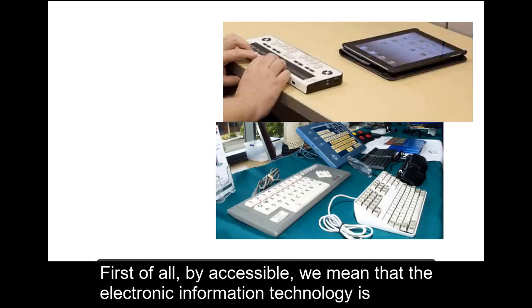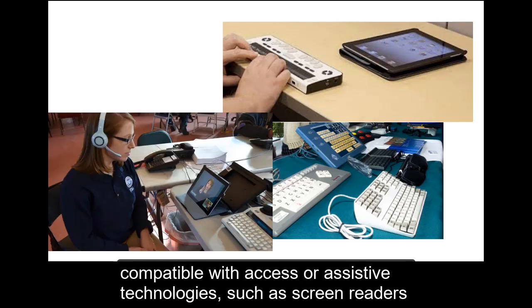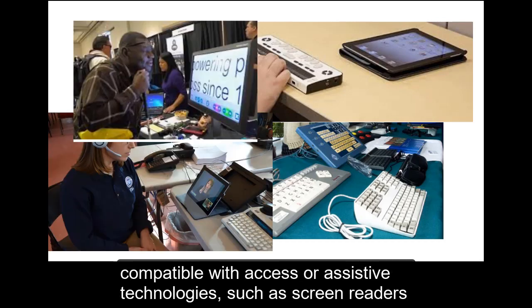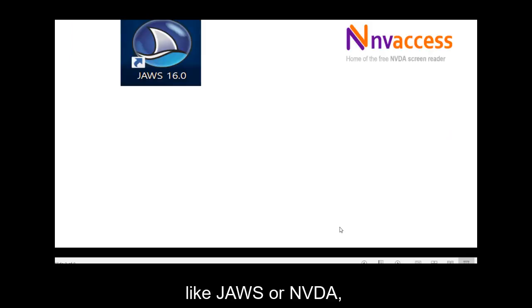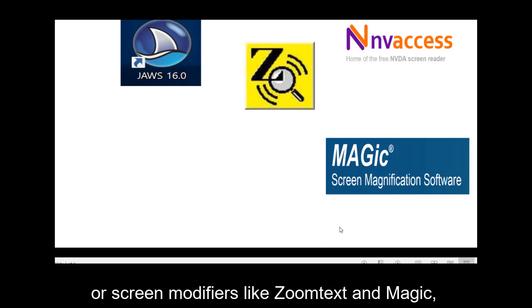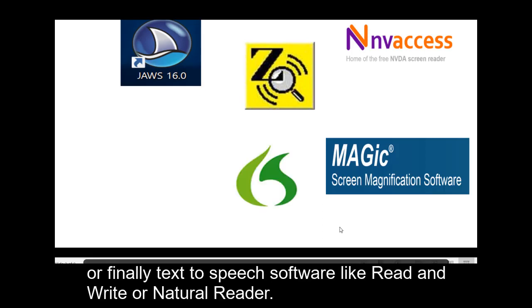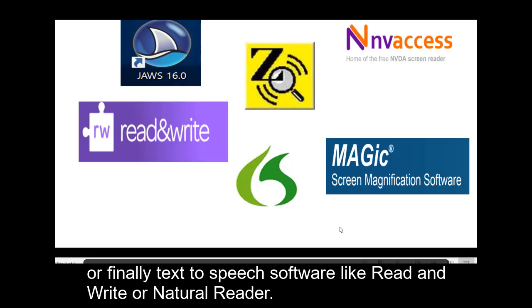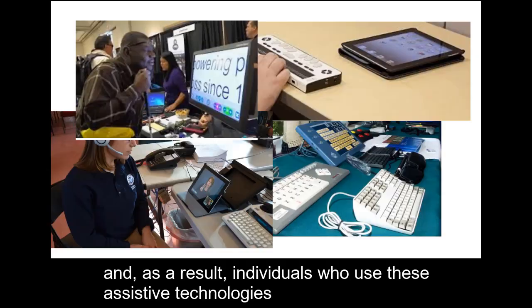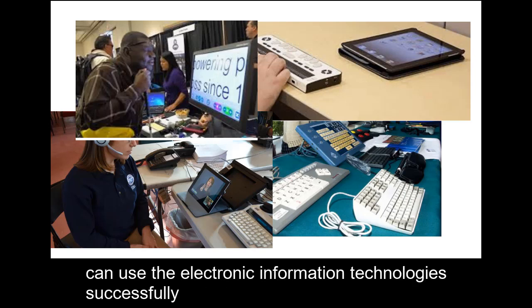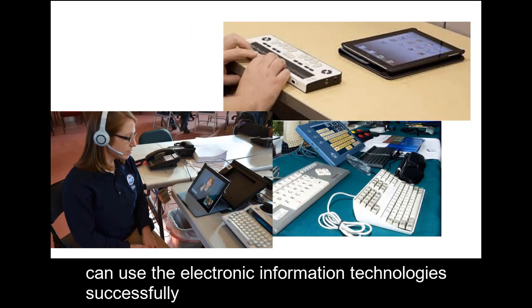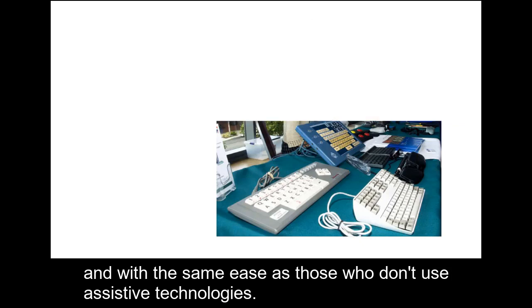By accessible, we mean that the electronic information technology is compatible with assistive technologies such as screen readers like JAWS or NVDA, screen modifiers like ZoomText and Magic, voice-activated software like Dragon, or text-to-speech software like Read&Write or NaturalReader. As a result, individuals who use these assistive technologies can use electronic information technology successfully and with the same ease as those who do not use assistive technologies.